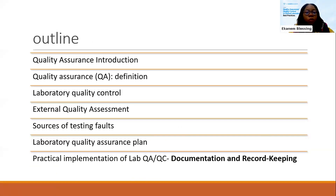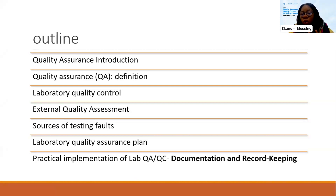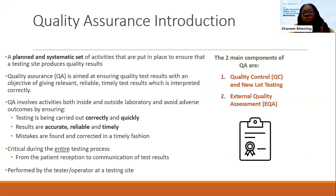My short presentation will take this outline: we give a brief introduction of quality assurance and define it based on the WHO definition; we look at quality control vis-à-vis external quality assessment as an important component of quality assurance; we look at the different sources of faults in clinical laboratories; and we conclude with a practical example of implementing quality control. Quality assurance is a planned and systematic set of activities put in place to ensure that the testing site produces quality results, meaning accuracy, reliability, and most importantly, timeliness.